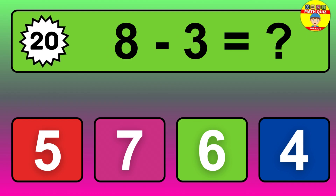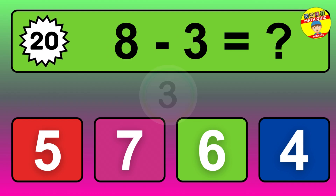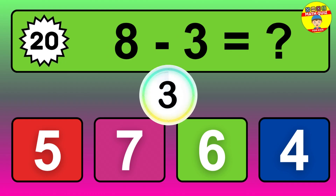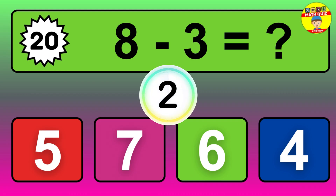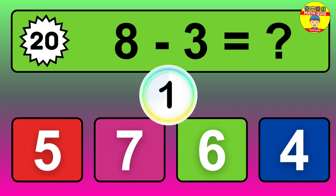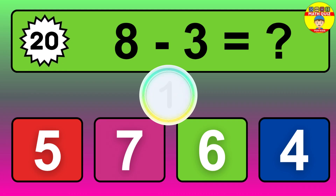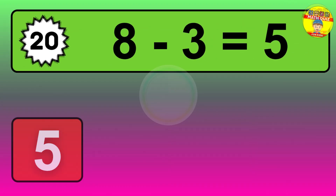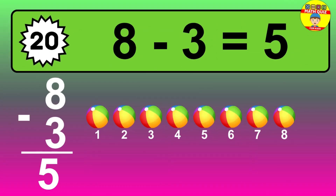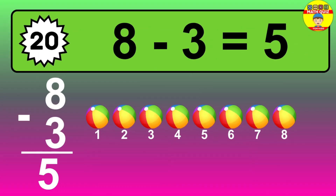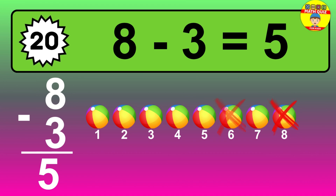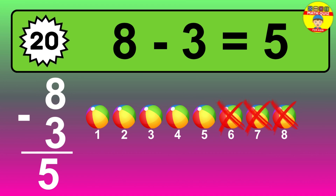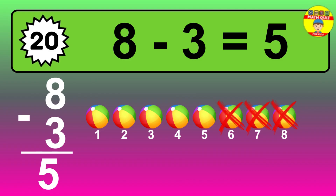Question 20. 8 minus 3 equals what? The answer is 8 minus 3 is 5. Let's count it: 1, 2, 3, 4, 5.